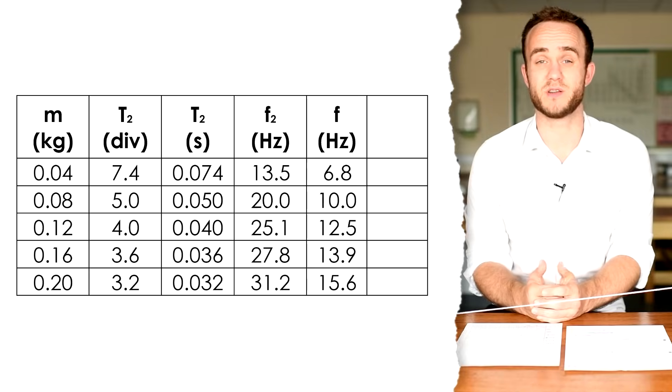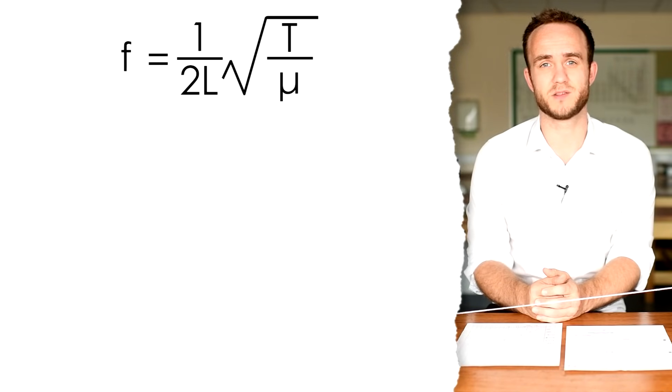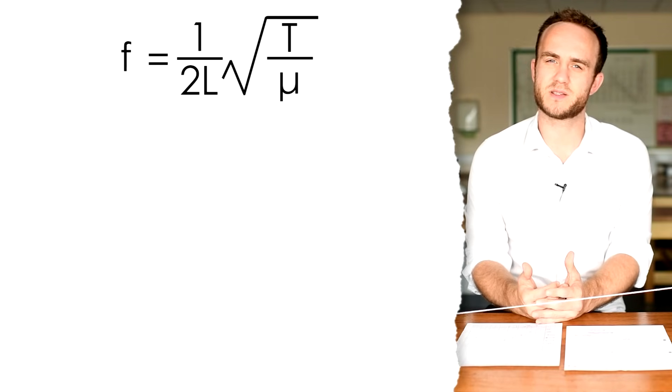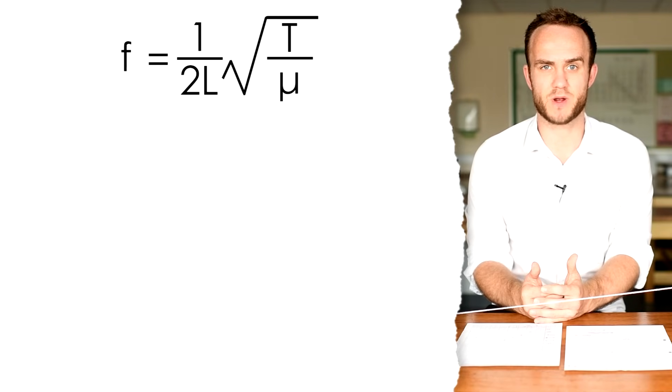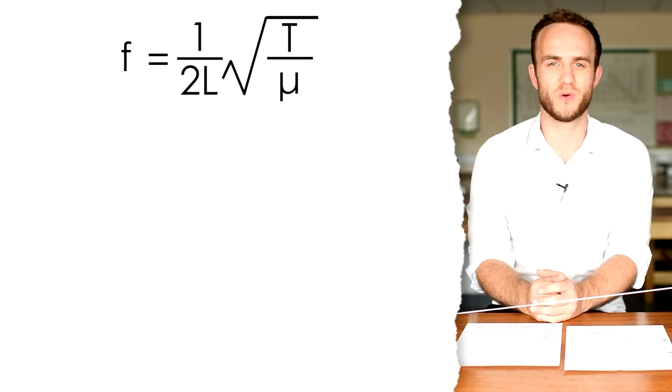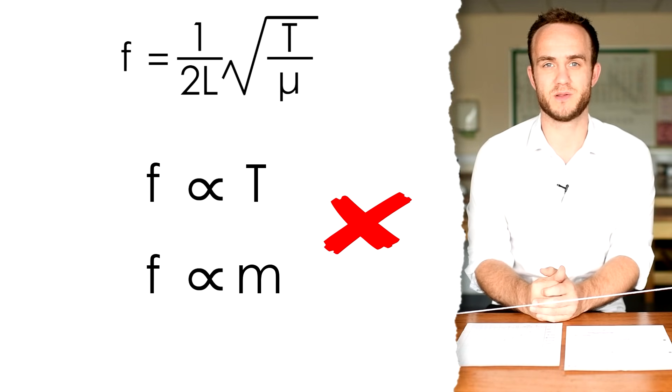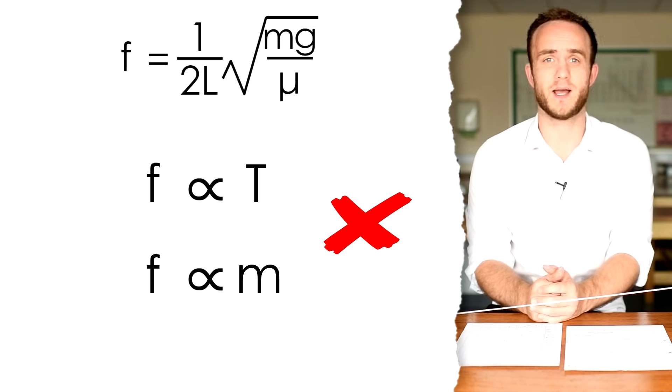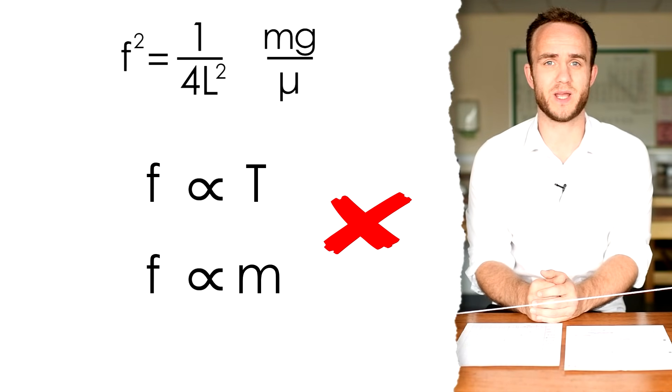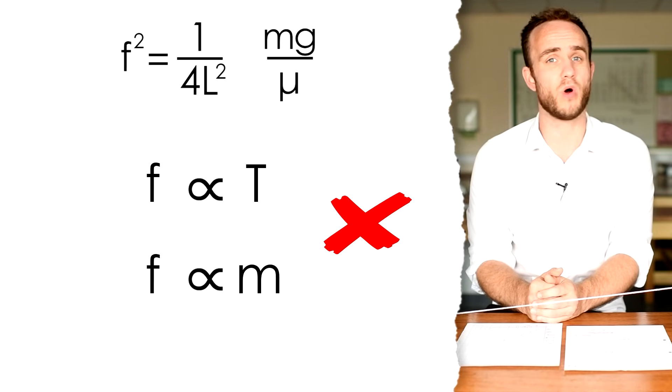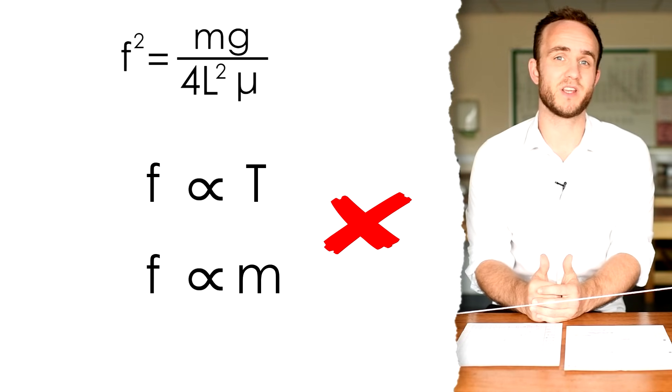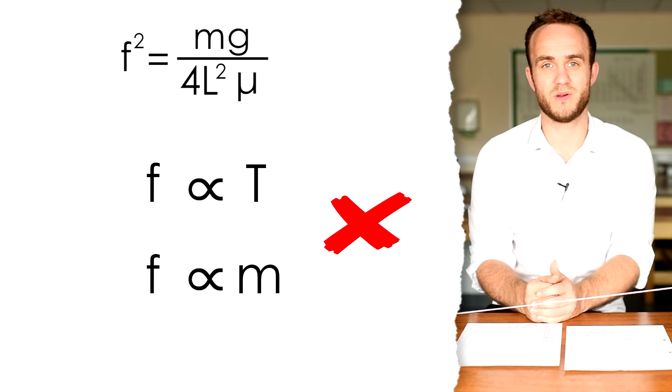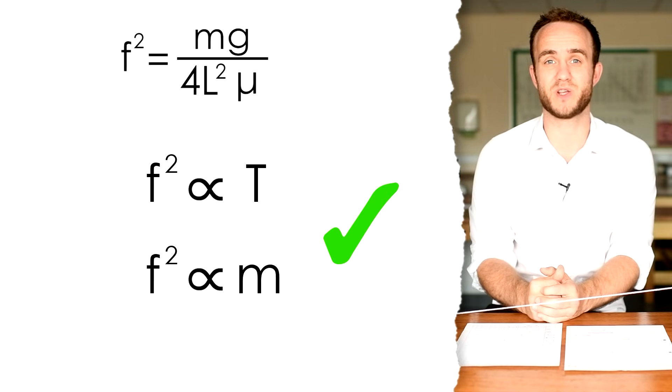Now, let's have a think about the original equation. F equals 1 over 2L times the square root of T over mu. Now, because the tension is inside that square root, we can see that the frequency is not going to be directly proportional to the tension. Therefore, it's not going to be directly proportional to the mass that we have on the end of the piece of string. However, if we square the whole equation, we have F squared equals 1 over 4L squared times mg over mu.